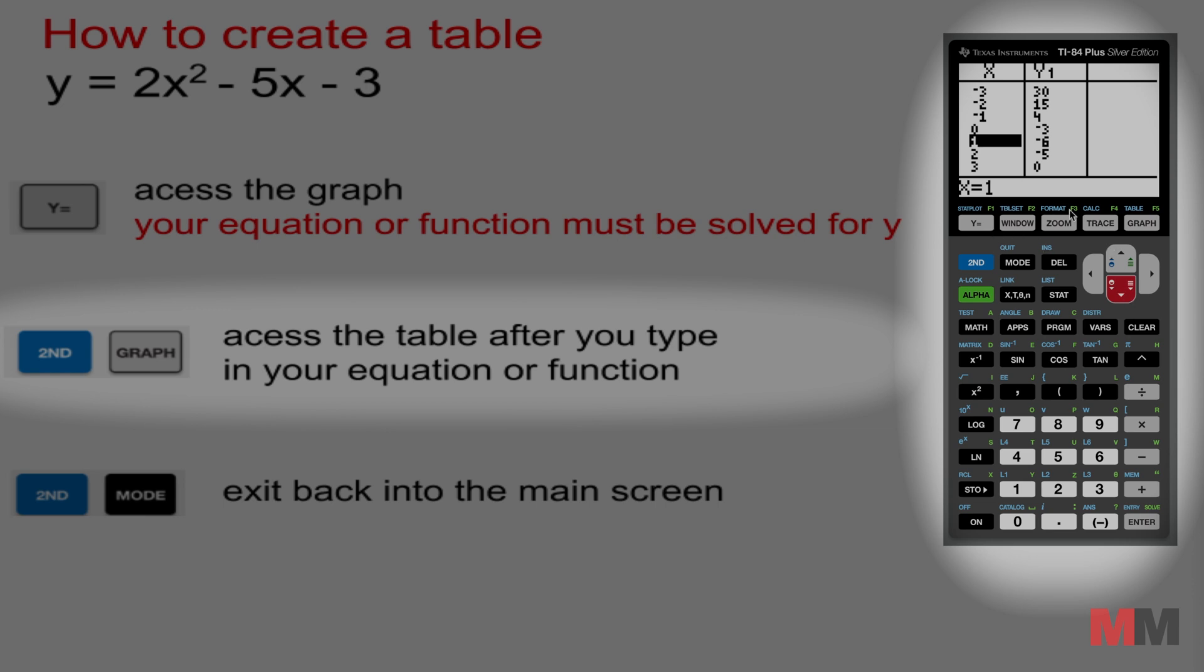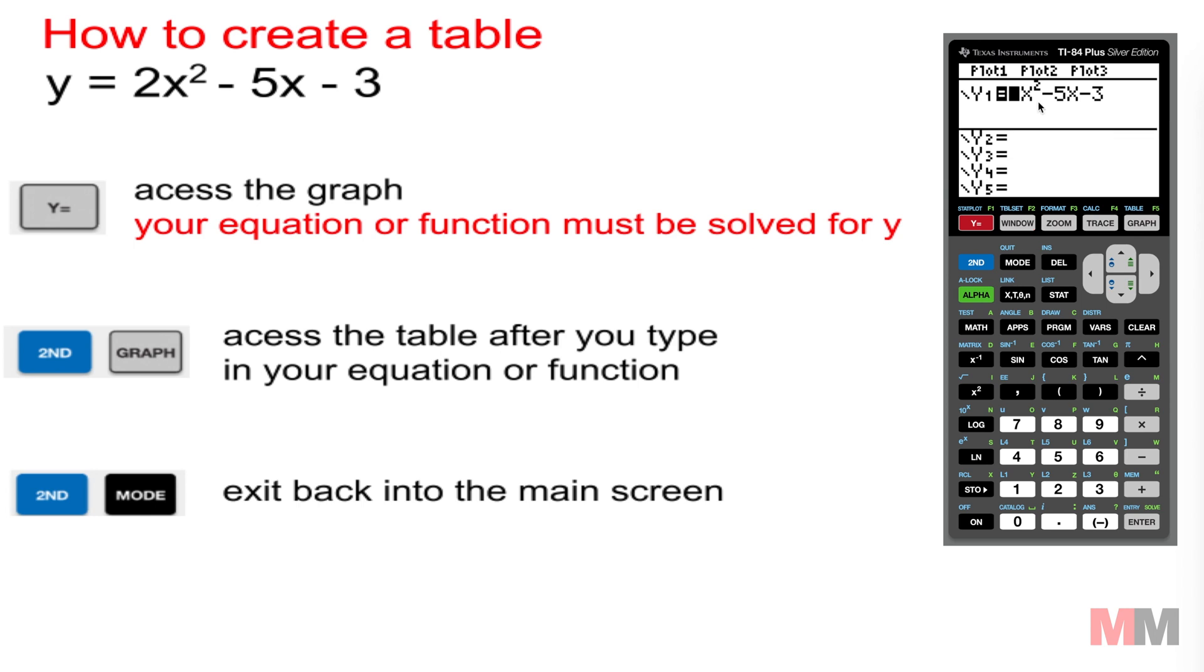If you want to exit out of the screen you just press 2nd mode and you're back to where you started. So just to repeat: you press Y equals, type in the equation, and once you want to access your table you just press 2nd graph and you'll get a table of values right away. You can use these points to either graph or if you want to check if a point belongs in an equation. All sorts of uses for this.